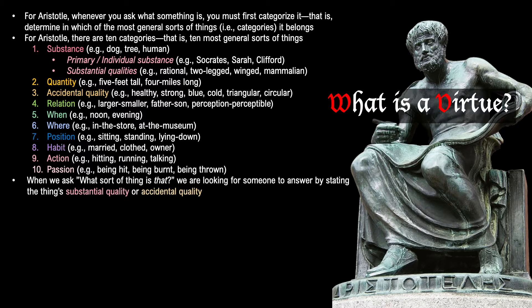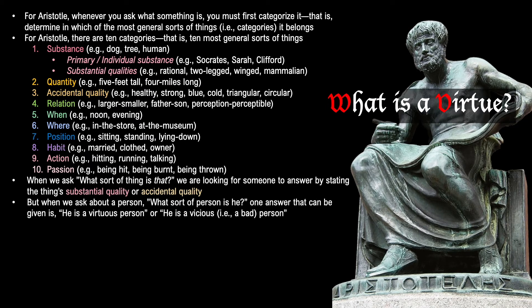Into which of these categories do we place virtue? When we ask what sort of thing is that, we are looking for someone to answer by stating the thing's substantial quality or accidental quality. When we ask about a person — what sort of person is he? — one answer is: he is a virtuous person, or he is a vicious, that is, bad person. This indicates that virtue is a quality. So virtue is a quality, and vice also is a quality.